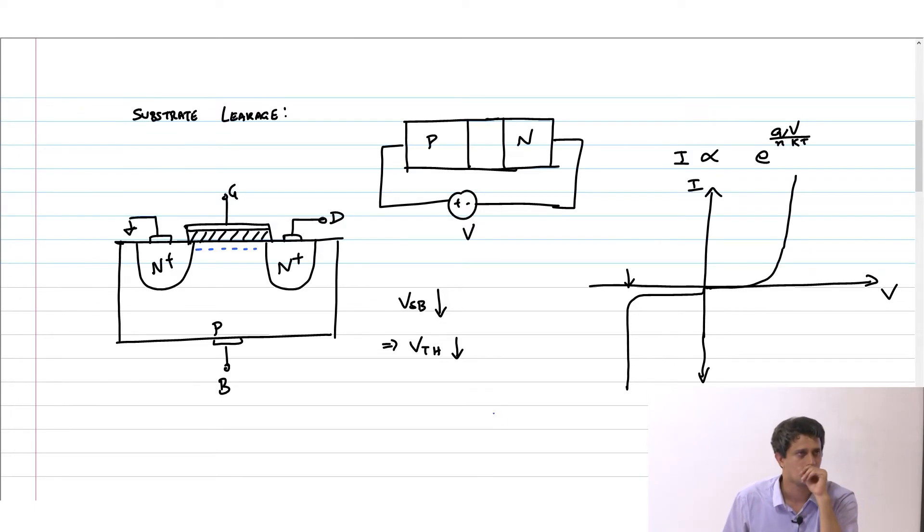If you apply a positive value then you can get some either electrons or some depletion that happens and therefore threshold voltage will come down. This is the back gate effect that we have abstracted out. This is okay, you could have a larger current in the transistor by doing this. But what happens if V_B is connected to some positive value?